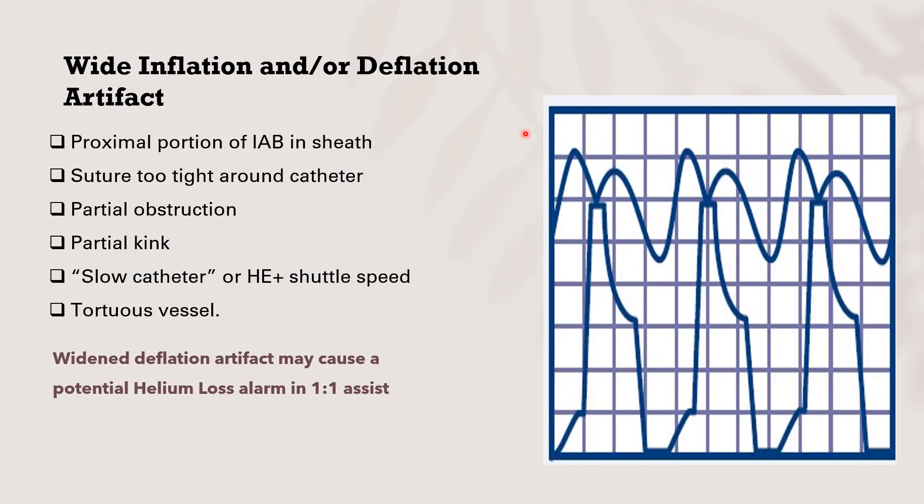Wide inflation or deflation artifact. If we see here, we will find that there is no augmented pressure. There is wide inflation or deflation of the balloon, wide variation in deflation and inflation of the balloon. This means the problem is a proximal portion of the aortic balloon present in the sheath. This means sutures are too tight around the catheter, there is partial obstruction, partial kinking, slow catheter or shuttle speed, or tortuous vessels. Wide deflation artifacts may cause potential helium loss alarm if we use one-to-one assisted aortic balloon pump.